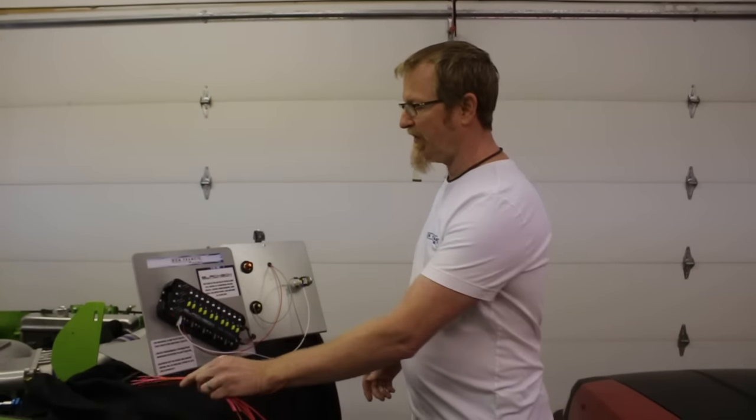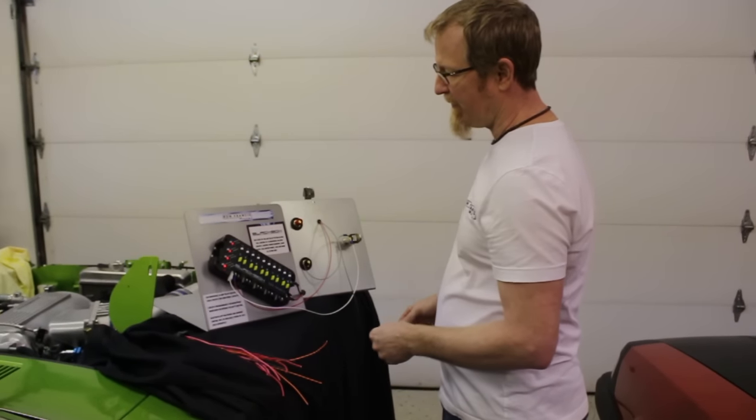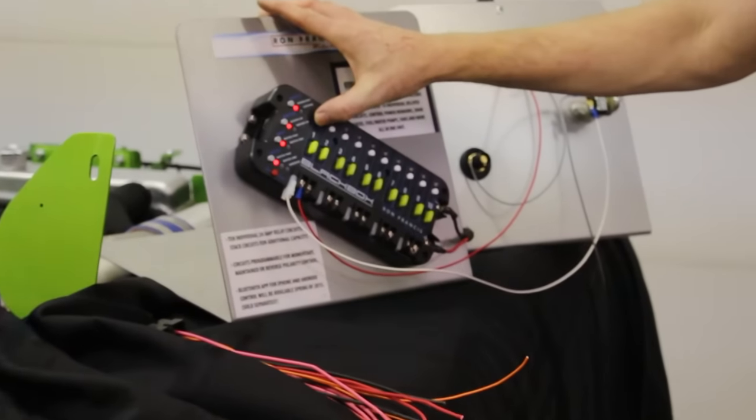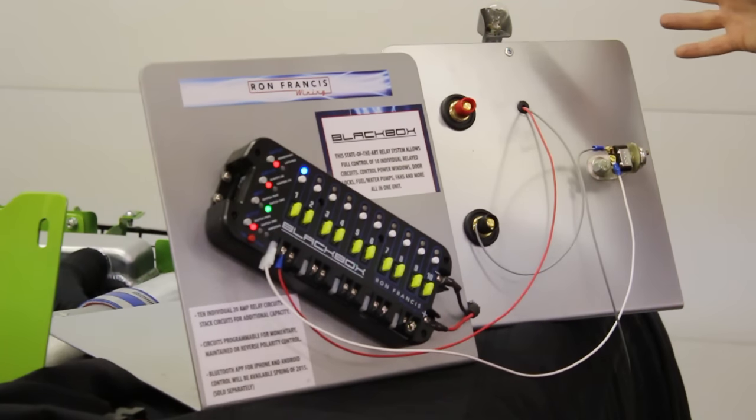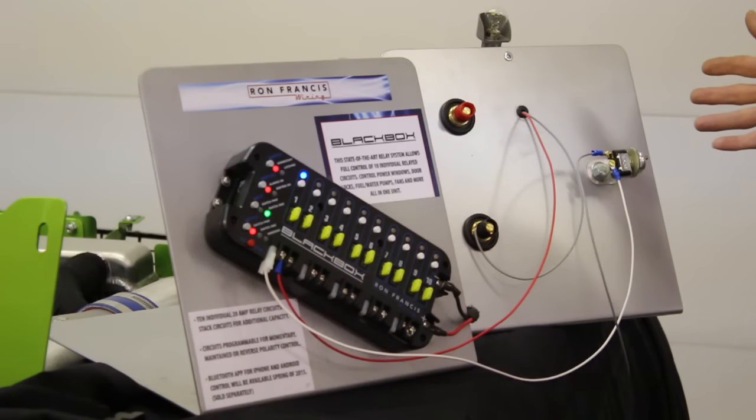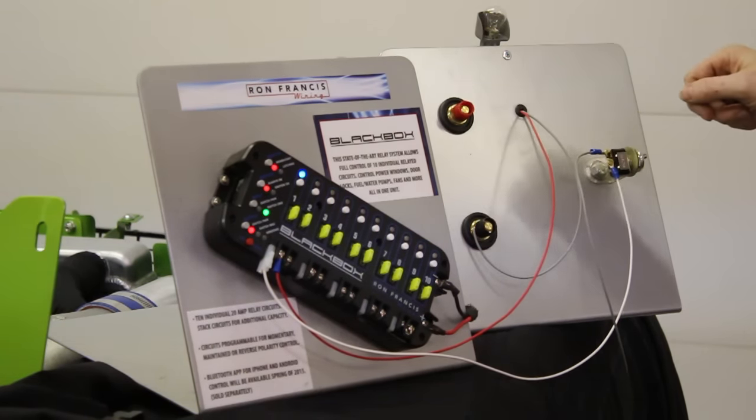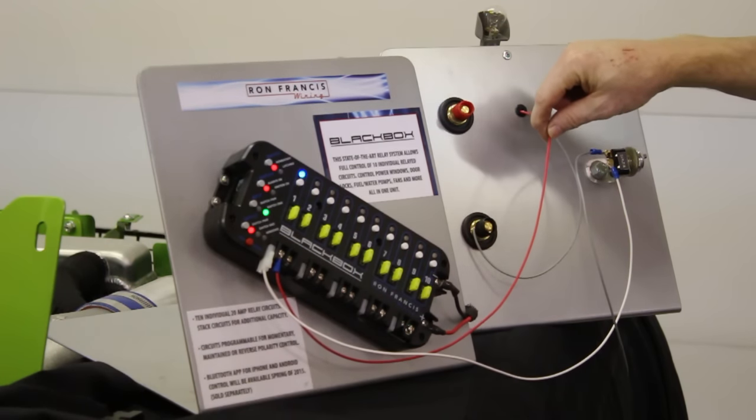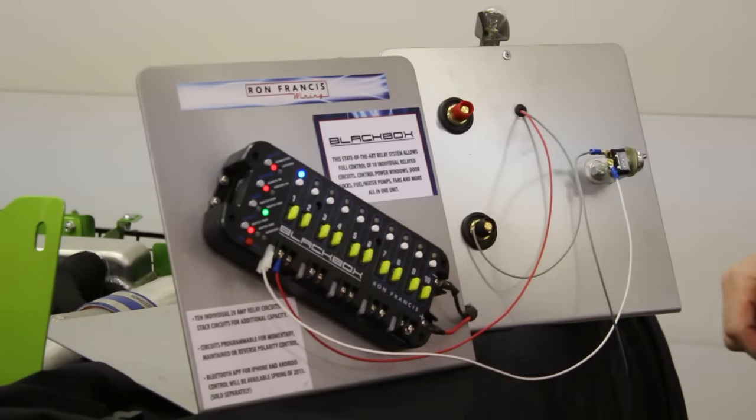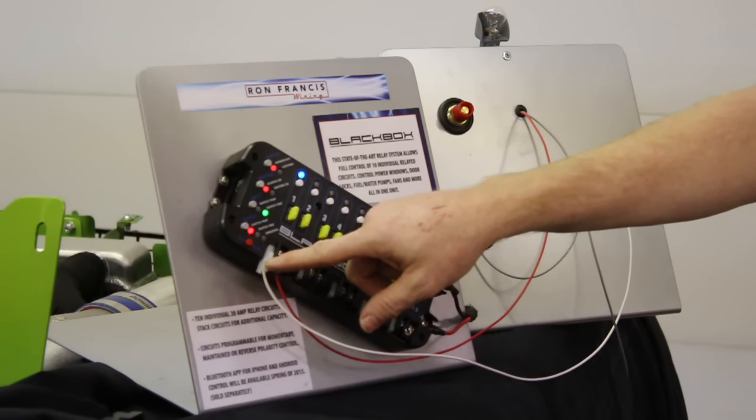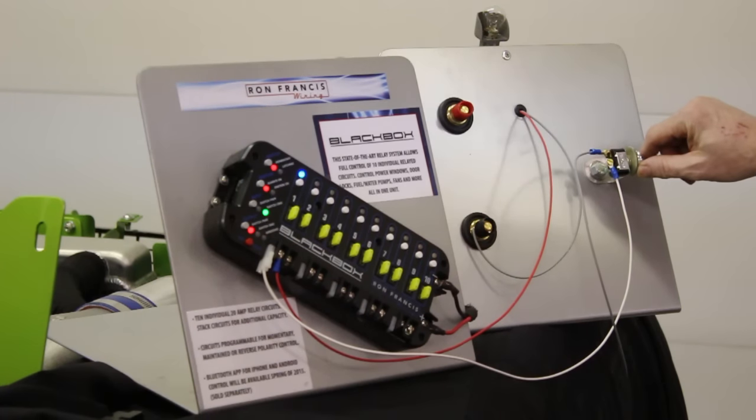So to give you a little demonstration on how the Black Box works, I'll turn it on here and show you circuit number one. I have a little jig here to kind of give you an explanation of how it works. Basically what we have is a power stud, a ground stud. We have a light back here with the power for the light going to the output of circuit number one on the Black Box.